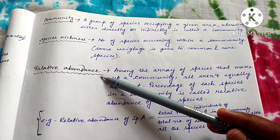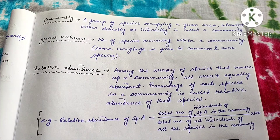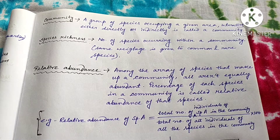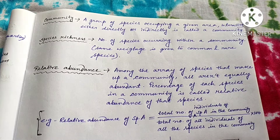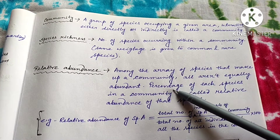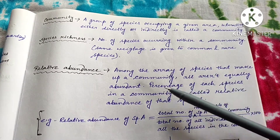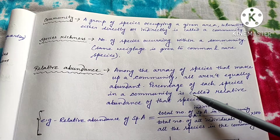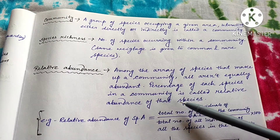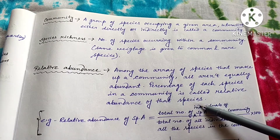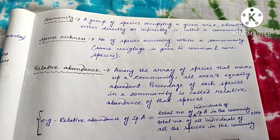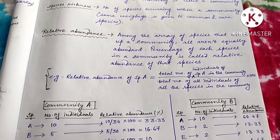Now coming to the next point: what is relative abundance? In a community, obviously there are various types of species present but all of them are not equally abundant. The percentage of each species in a community is known as the relative abundance of that species in that community. Let me show you a chart here.